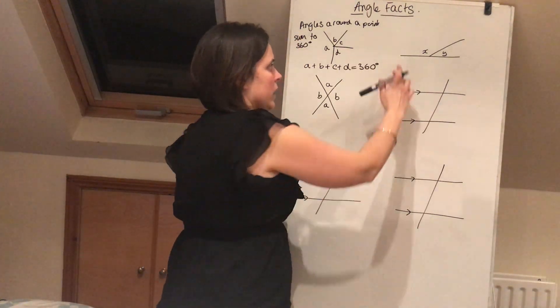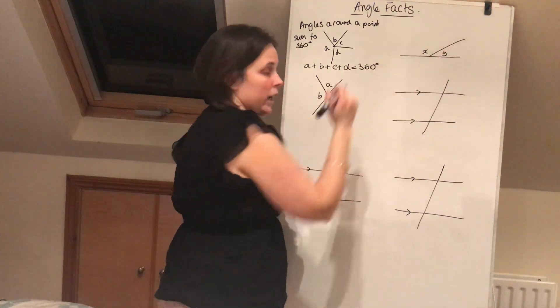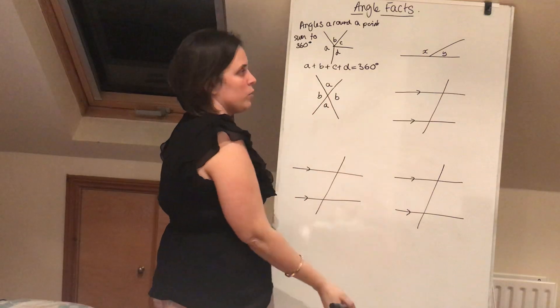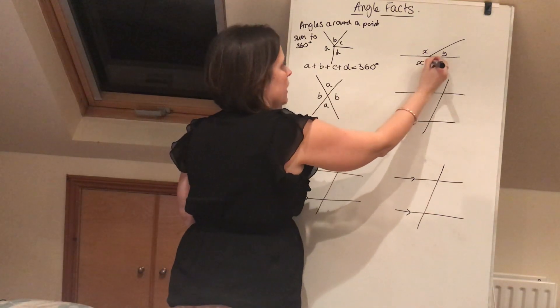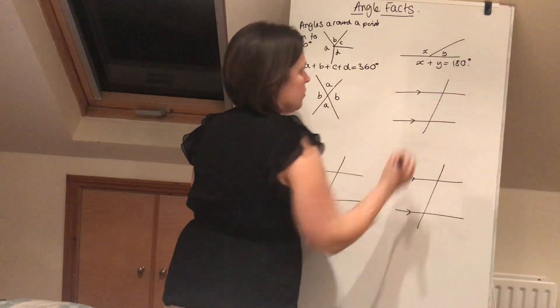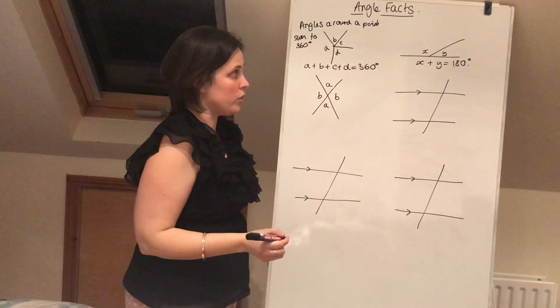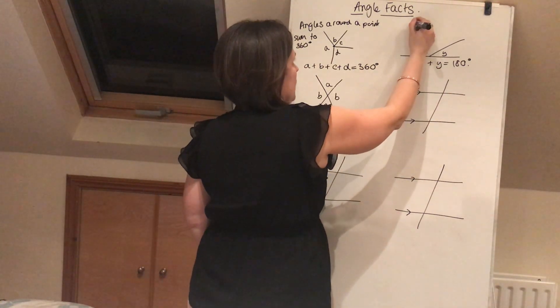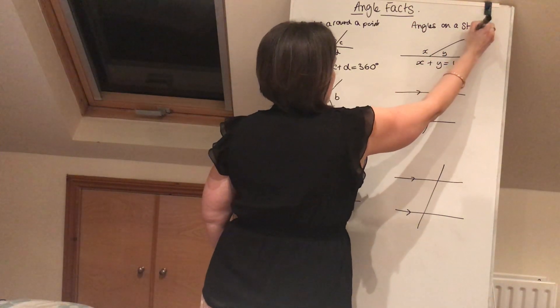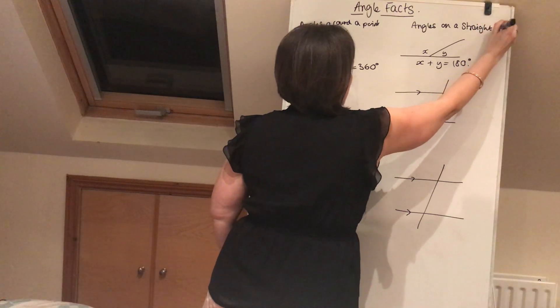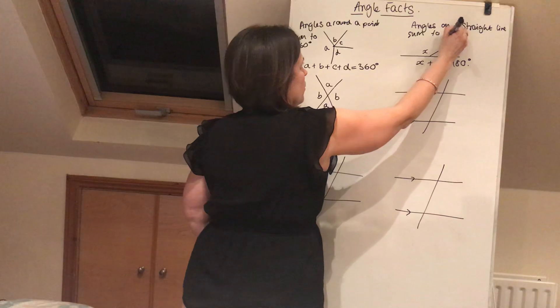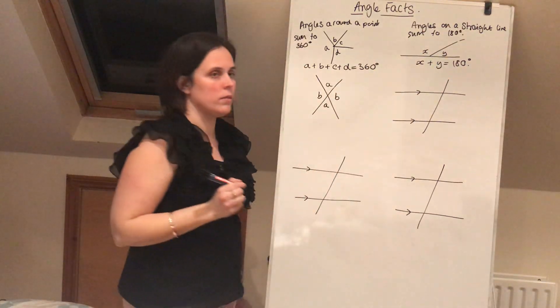And here, what we have is we have a straight line and two angles X and Y, and we could have more if we wanted to, but the important thing is we've got a straight line. And here, if you're in a straight line, then those two angles will add up to 180 degrees. And what we say here is angles on a straight line sum to 180 degrees.